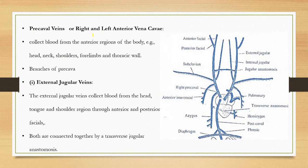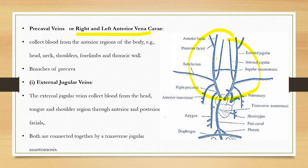The precaval veins, or the right and left anterior vena cava, collect blood from the anterior region of the body including the head, neck, shoulders, forelimbs, and thoracic wall. All deoxygenated blood enters the precaval veins and they open into the right atrium.